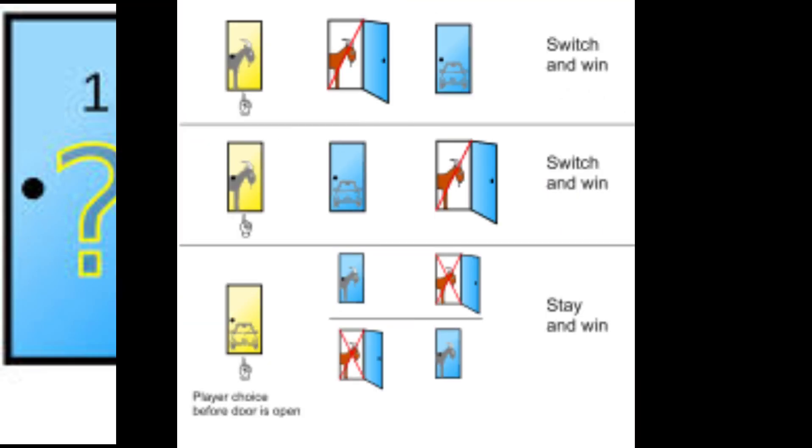Many people mistakenly treat Monty's reveal as a fresh start, but it's not. The initial choice you made still holds the original odds. One to three for the car, two to three for a goat, and switching just improves your chances of correcting a bad guess.